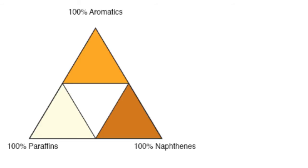At the top, where you see 100% aromatics, that one point represents pure aromatic compounds. On the left-hand side at the bottom, the corner represents 100% paraffins, and on the right, 100% naphthenes. The lines that connect these points represent binary mixtures.